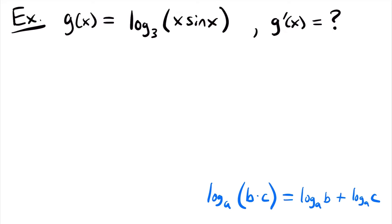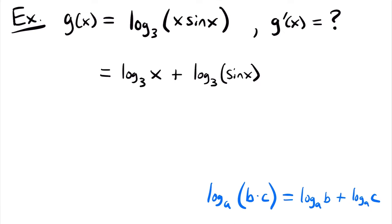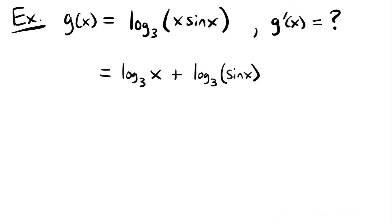In its current state, if we went through the rule for taking the derivative of the log function, we would have to take the derivative of the inside function where two functions are being multiplied together, and that would require the product rule, getting very complicated. So instead, let's split this up into two log functions. We will have that this is equal to log base 3 of x plus log base 3 of sin x. Now using that property, we will have that g prime of x is equal to the derivative of log base 3 of x, which is 1 divided by the natural log of that base 3 times x.